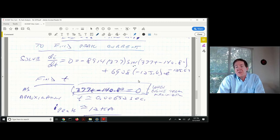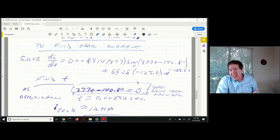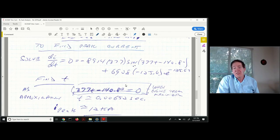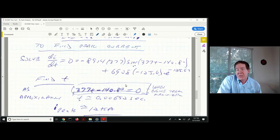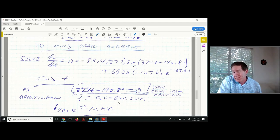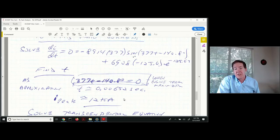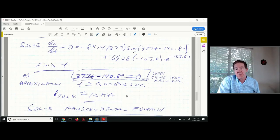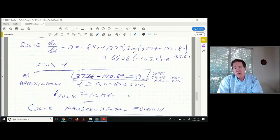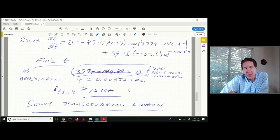You could use numerical techniques to find the time that satisfies this equality. But usually what you would do if you just want to get close is look at what does 377t minus 140.8 need to be to make cosine of that equal to 1. This just has to be 0. You solve for time. Time would be 0.00652 seconds. You can plug that back in, and you get an approximation for what this peak value is at 12 kiloamperes.